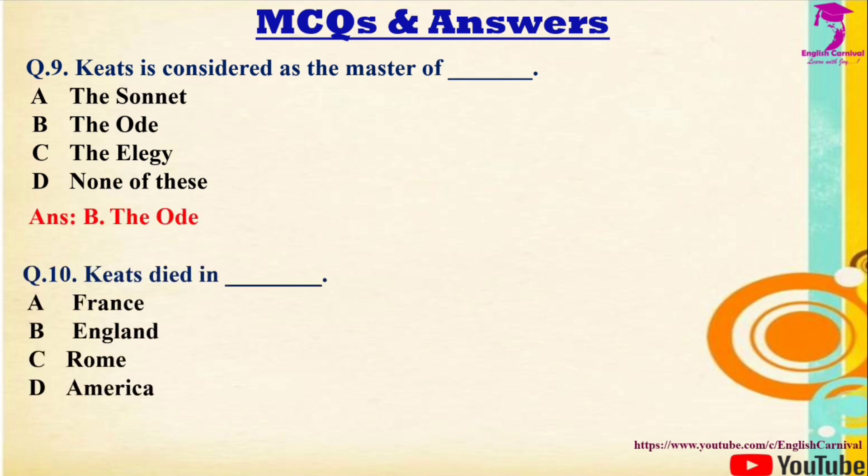Question 10: Keats died in — Options: A) France, B) England, C) Rome, D) America. Correct answer is C — Rome.